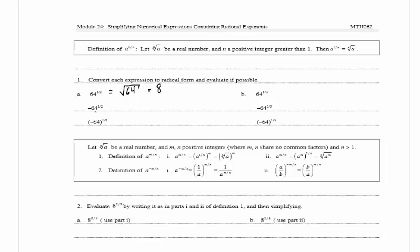In the second one we have negative 64 to the 1 half. So we have the negative out in front of the radical and the square root of 64, and when we evaluate that it's equal to negative 8.